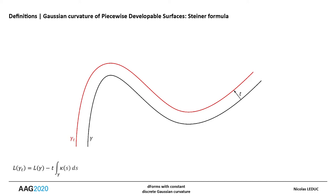In the simple case of a curve, there is a linear relationship between the length variation of the offset curve (in red on the picture) and the total curvature of the original one (in black).